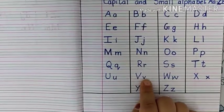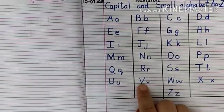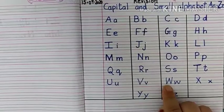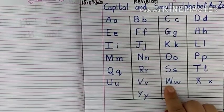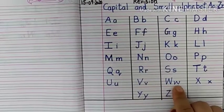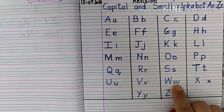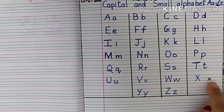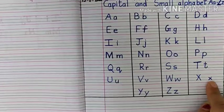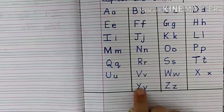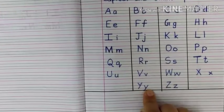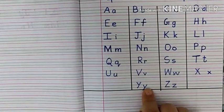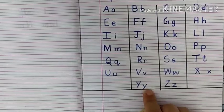Capital V, small v, V says B. Next, capital W, small w, W says W. Next, capital X, small x, X says X. Next, capital Y, small y, Y says Y.